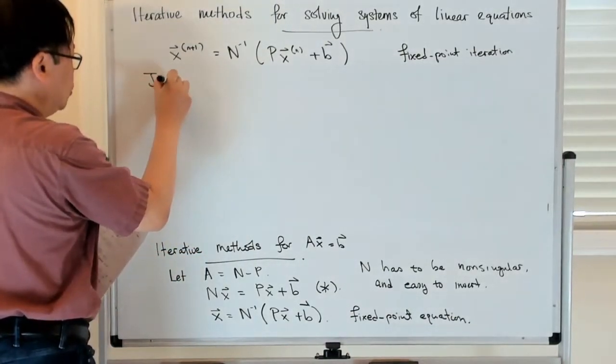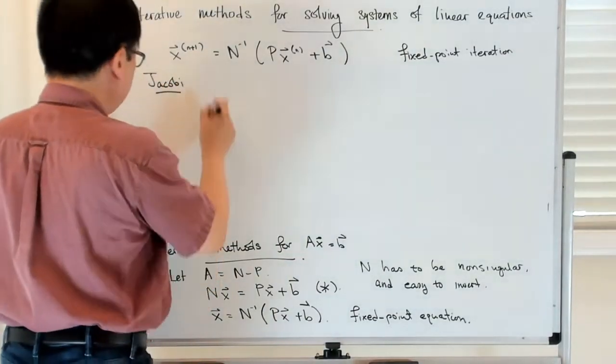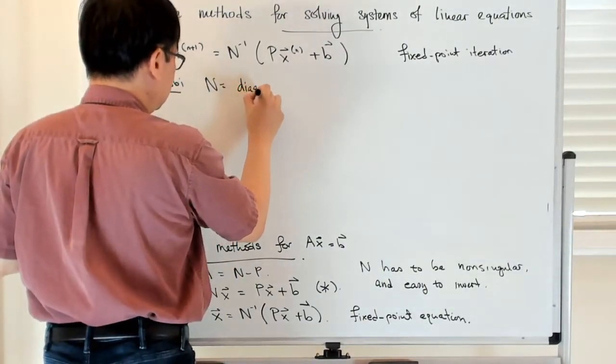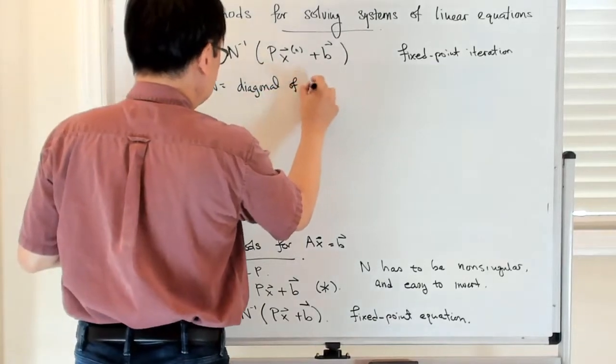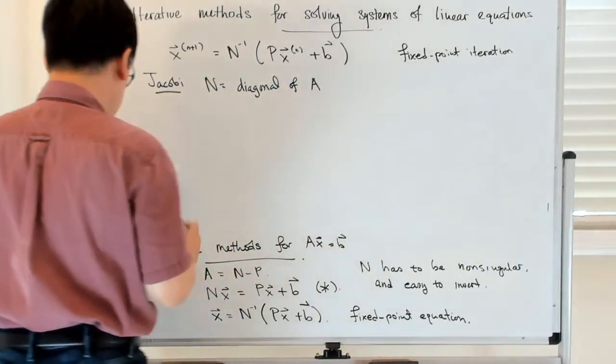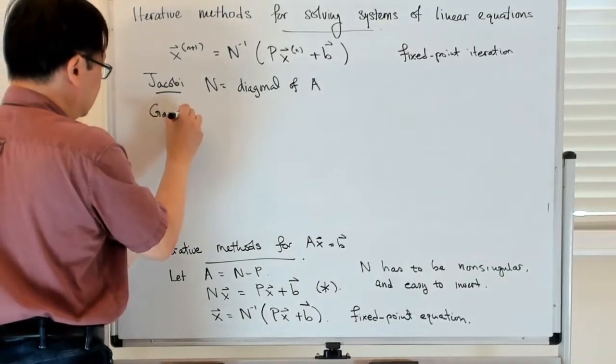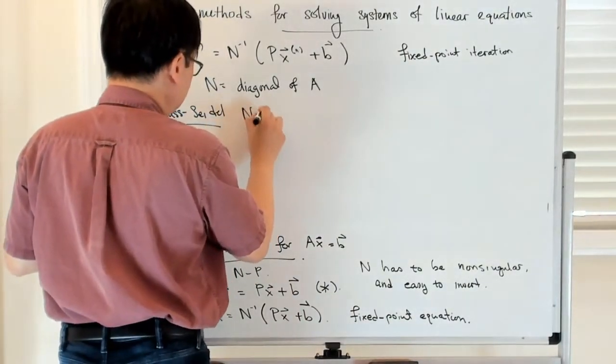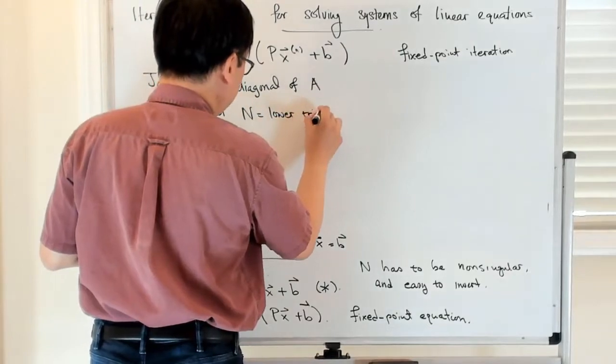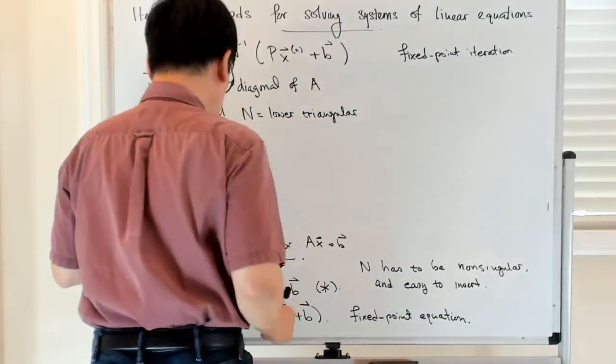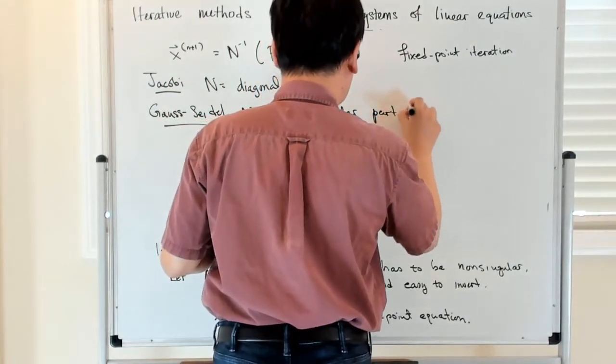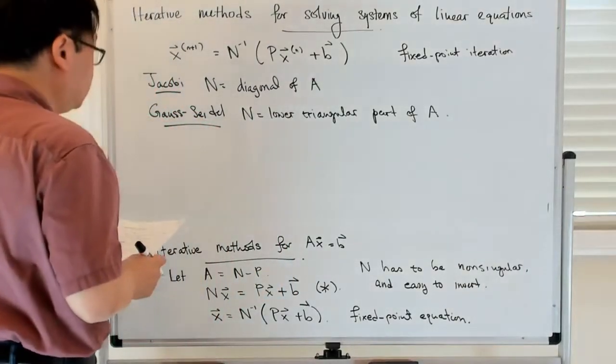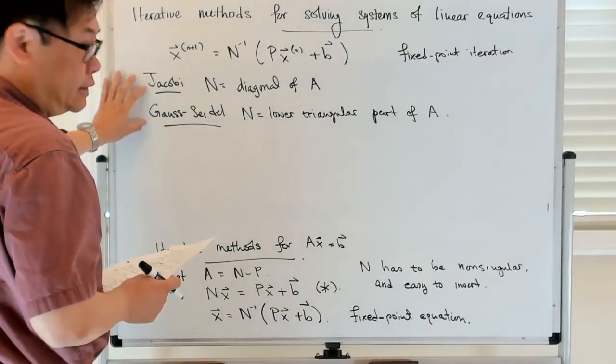So this is now a fixed point iteration. Let's look at two simple examples for this. There are two cases. There's Jacobi, which uses N as the diagonal of A. And then there's also what's called Gauss-Seidel, where N is the lower triangular part.